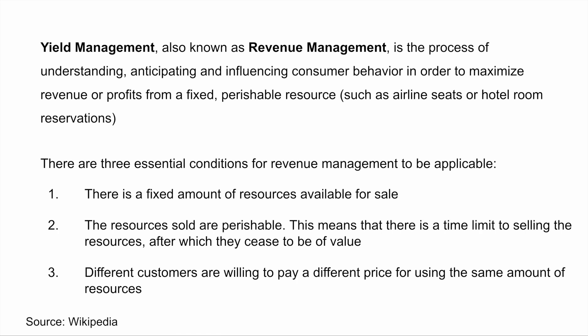As a formal practice, yield management is relatively young — the first academic articles didn't appear until the 1980s. Now let's look at the common conditions necessary for a problem to fall into the space of yield management or revenue management. Here's the Wikipedia definition: yield management, also known as revenue management, is the process of understanding, anticipating and influencing consumer behavior in order to maximize revenue or profits from a fixed perishable resource. There are three conditions for it to be applicable: a fixed amount of resources, the resources are perishable, and different customers are willing to pay a different price for using the same amount of resources.